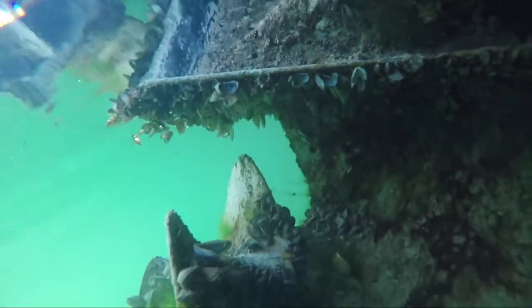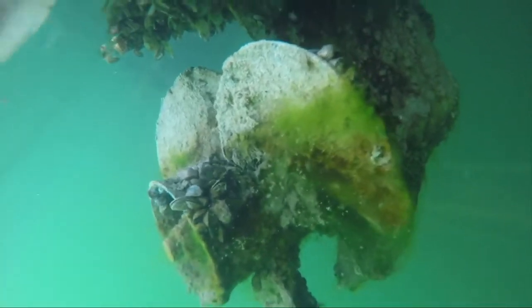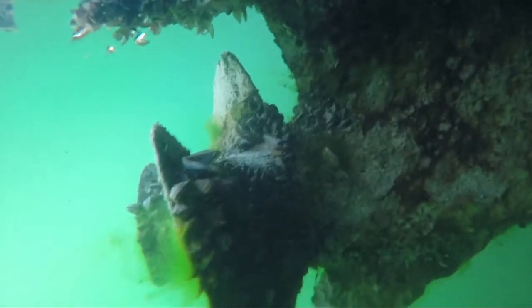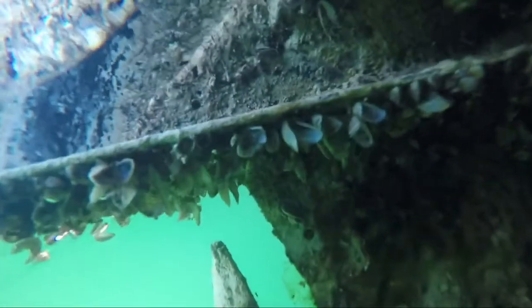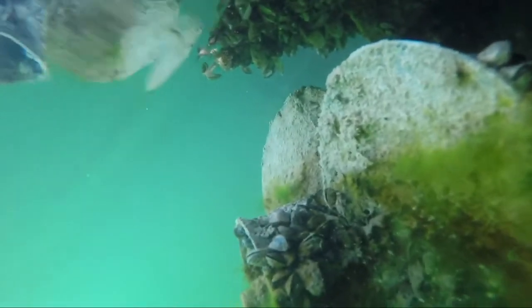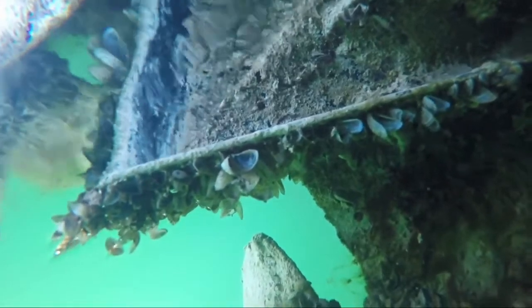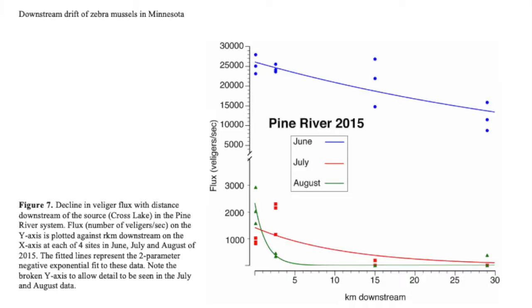Zebra mussel veligers were established at the outlet of the infested source lake. The veligers were obtained from plankton tows at each station. Vertical tows of the entire water column were taken with a 50-micrometer mesh net, 30 centimeters in diameter and 120 centimeters in length. The veliger concentration was then counted by microscope.